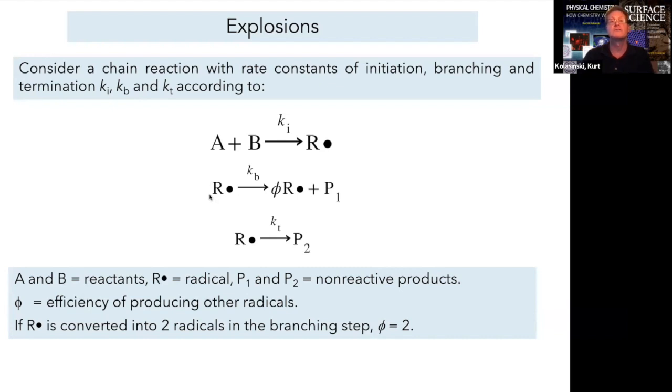R-dot can also go through branching reactions with a rate constant Kb that produce more radicals, as well as a product. We can also have a termination step in which you get recombination of radical species. This termination step with Kt as a rate constant produces another product. P1 and P2 are non-reactive products.